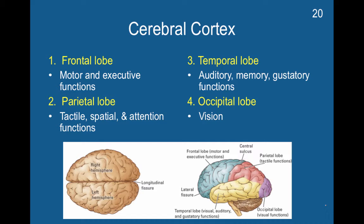We have the frontal lobe, which controls motor and executive functions. We have the parietal lobe, which is responsible for tactile, spatial, and attention functions. We have the temporal lobe, which handles auditory, memory, and gustatory functions.